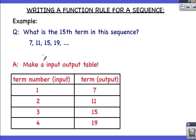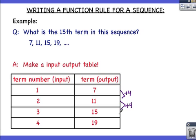Our second term is 11, so input is 2 and output is 11. Our third term is 15, so input is 3 and output is 15. Our fourth term is 19, so input is 4 and output is 19. We can use the approach from previous lessons to find a function rule. We check to see if it's linear—our rise is plus 4 and our run is plus 1, so our slope or rise over run is 4 over 1, or 4.